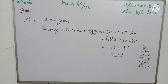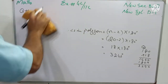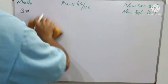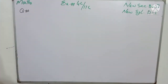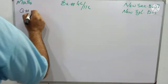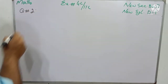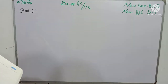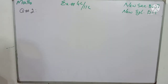Now I am going to solve the second question of the same exercise. The second question involves some polygons and we have to find the values of the unknowns. I will first read the question: find the value of the unknown in each of the following figures.